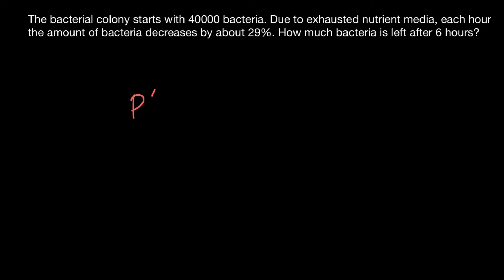P of T would equal to 40,000. This is the number of bacteria at the beginning. So it comes from here. And we have to multiply by one minus 0.29.